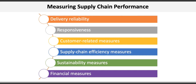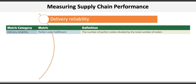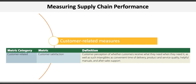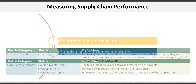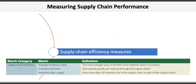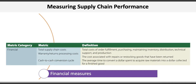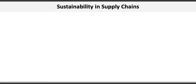Another key component of effective supply chain management is measuring supply chain performance. There are six general performance measures: delivery reliability, measured by perfect order fulfillment; responsiveness, measured by order fulfillment lead time and perfect delivery fulfillment; customer-related measures such as customer satisfaction or net promoter score; supply chain efficiency measures including average inventory value, inventory turnover, and days supply of inventory; sustainability measures such as energy reduction or CO2 emissions; and financial measures including total supply chain costs, warranty or processing return costs, and the cash-to-cash conversion cycle.